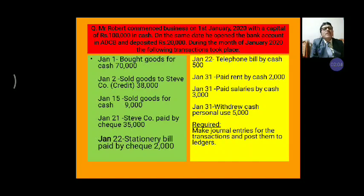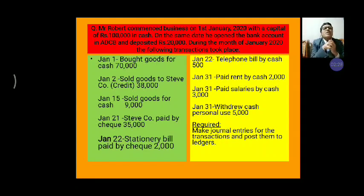Again, 31st January, paid salaries by cash Rs. 3,000. Again, 31st January, withdrew cash for personal use Rs. 5,000. So these are the transactions. You are required to make journal entries for the transactions and post them into the ledger. These transactions were made by Mr. Robert's business in January 2020.